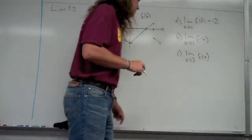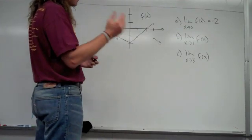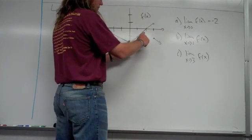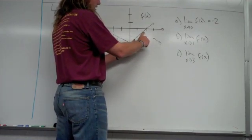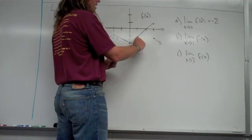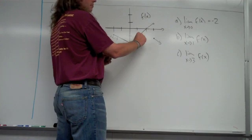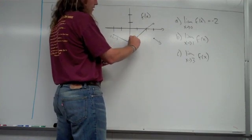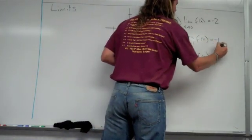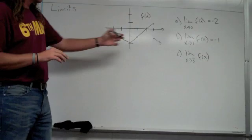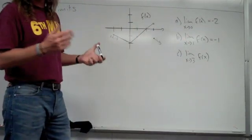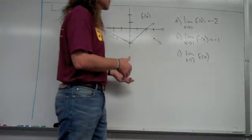In part B, find the limit of f of x as x approaches 1. There's a hole in the graph at x equals 1, but if I look from the left side and from the right side approaching x equals 1, they both close in on the same y value — which looks to be negative 1. So that limit is negative 1. Notice that even though the function has no value at x equals 1, it still has a limit.